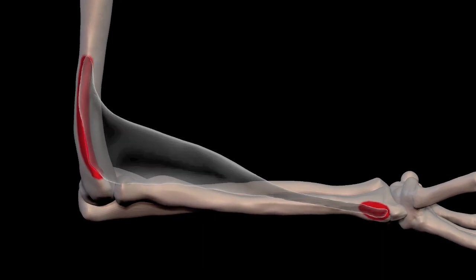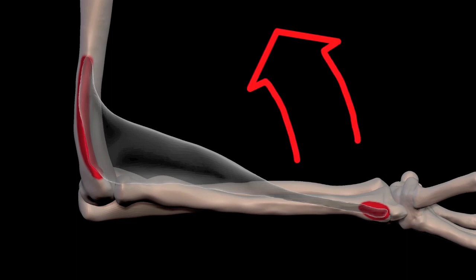When it is activated and the muscle shortens the distance between these two attachments, you can see that it would contribute to flexion of the forearm.